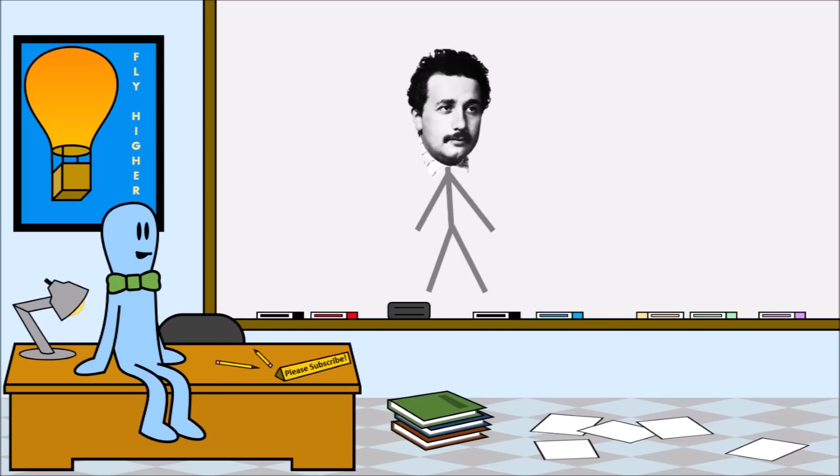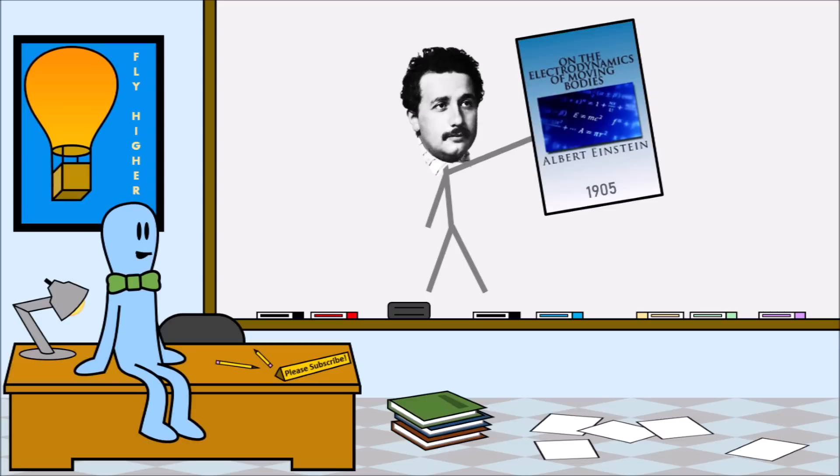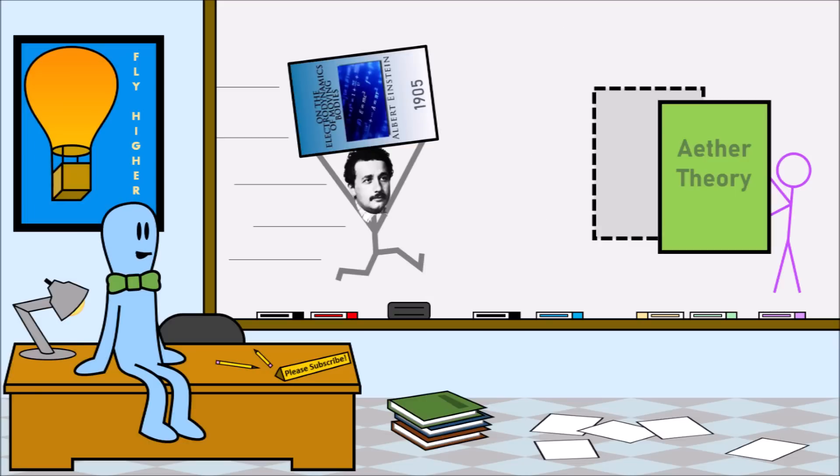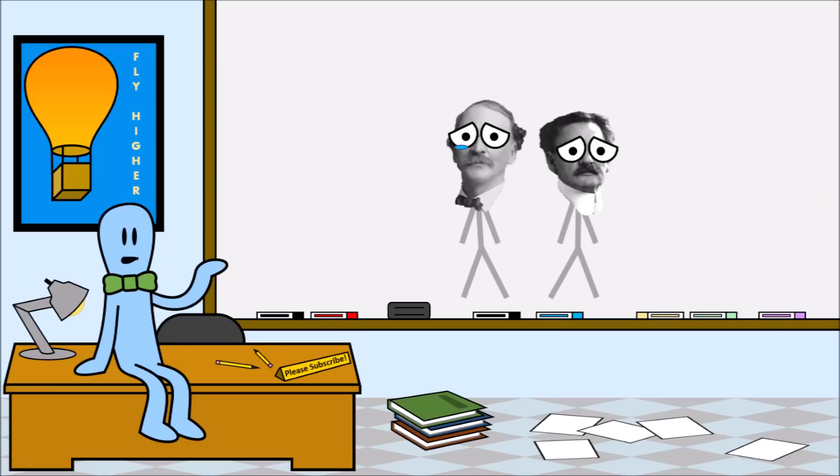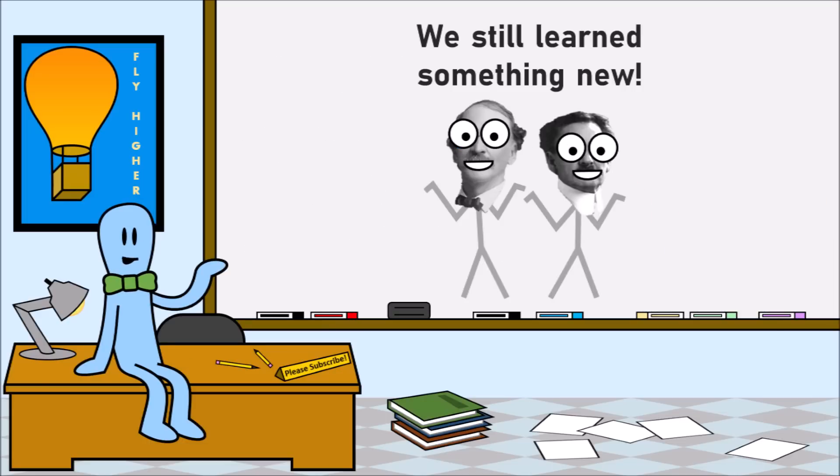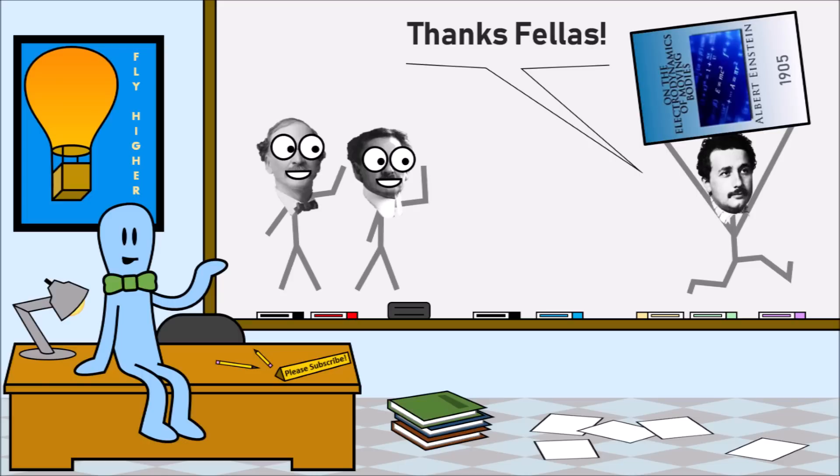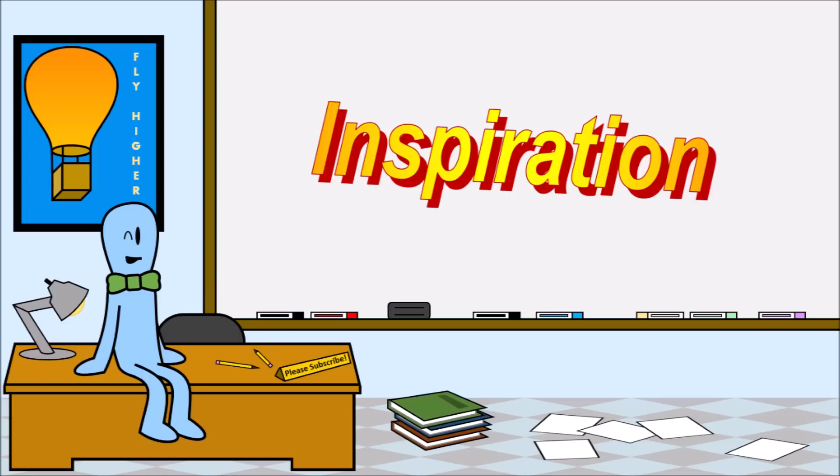So Albert here first proposed his theory of special relativity in his paper on the electrodynamics of moving bodies around the time most physicists have given up on aether theory. It was perfect timing for Einstein. Physicists were looking for a new universe-explaining theory at the same time he published his new universe-explaining theory. To quote Einstein himself, if the Michelson-Morley experiment had not brought us into such serious embarrassment, no one would have regarded the relativity theory as a halfway redemption. Man, I love Einstein quotes. So credit where credit's due. These guys failed, but their failure helped push science forward and helped Einstein to become one of the most famous scientists in history. Just something to think about in case you're having a bad day.